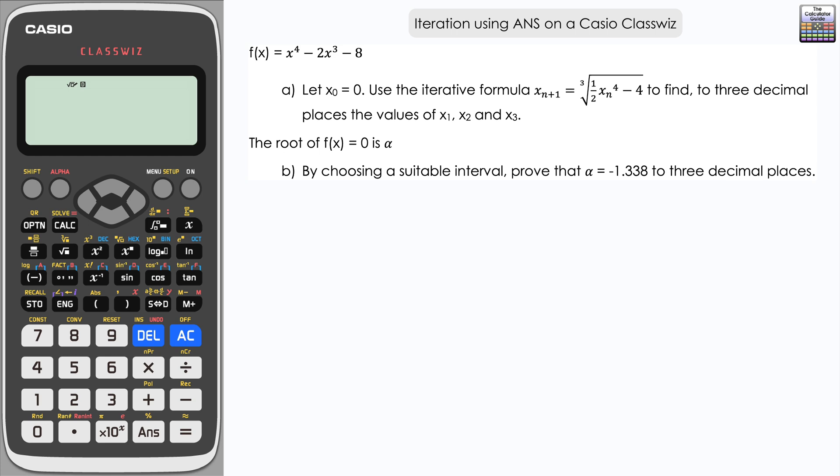The root of f(x) equals 0 is alpha. For part b, by choosing a suitable interval, prove that alpha equals negative 1.338 to three decimal places. In calculate mode, we need to input 0, which is our x0, as our answer. So it's 0 and then equals. You can see it displayed on the answer line.